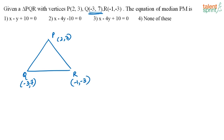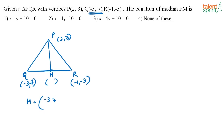You are supposed to find the equation of the median PM. This median PM divides line QR into 2 equal halves, so point M is the midpoint of QR. The coordinates of M are (-3 minus 1) by 2 and (7 minus 3) by 2, giving M as (-2, 2).